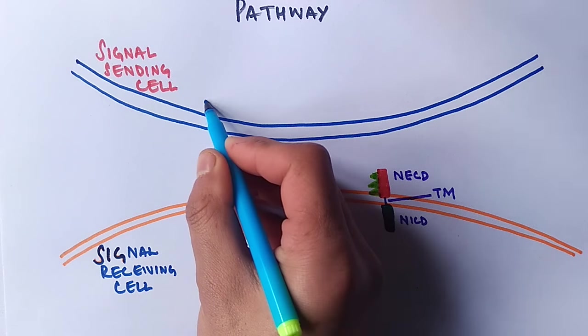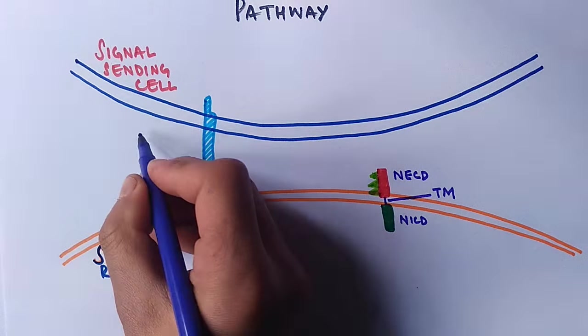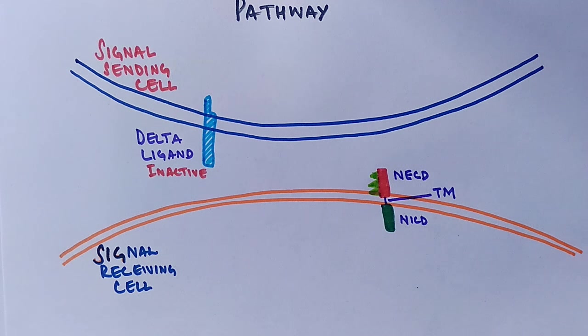On the other hand, the signal sending cell has a delta ligand that's inactive and needs to get activated in order to interact with the NECD domain of the NOCH receptor.